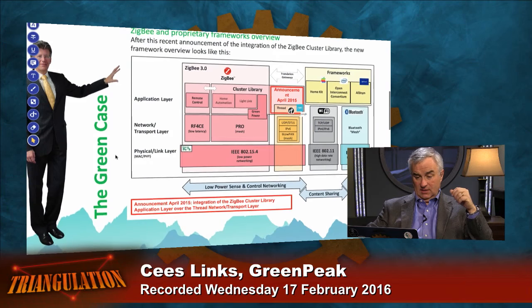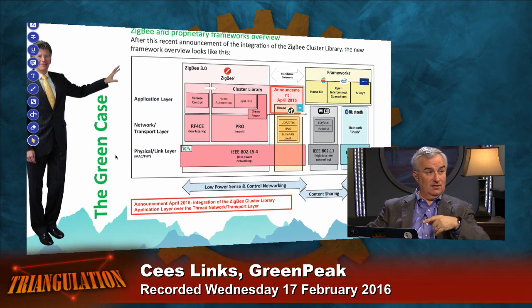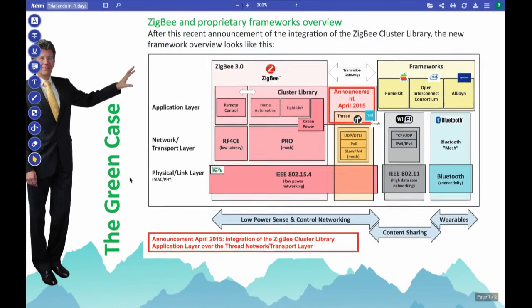So we have our 'Ethernet' — the bottom physical layer is agreed. But we're still in the stage of Novell versus IBM LAN Manager at the networking software layer. The networking software running on top of 802.15.4 is not standardized yet. Big companies are battling this out right now. Looking at the diagram: the physical link layer is well agreed upon, but the network transport layer still has RF4CE, Pro mesh, and others competing.